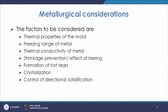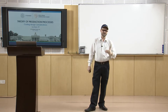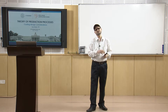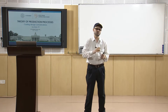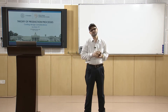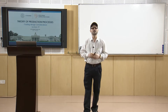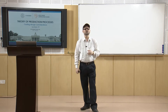Coming to the metallurgical considerations — the factors which must be considered. First, thermal properties of the mold: you can have a sand mold or a metal mold — gravity die casting, pressure die casting, or in continuous casting where the copper mold is cooled by water. The thermal properties of the mold will change the structure and properties of the material, because different heat extraction rates affect the solidified structure.